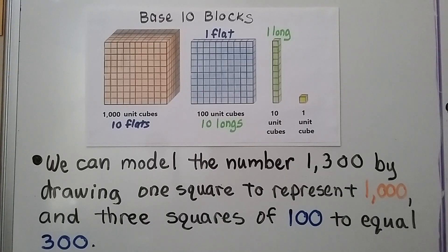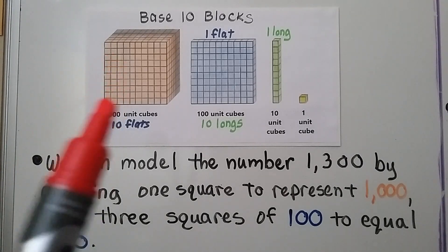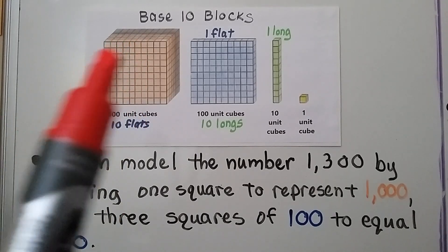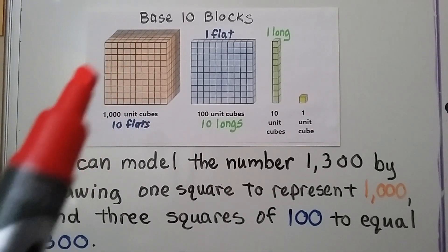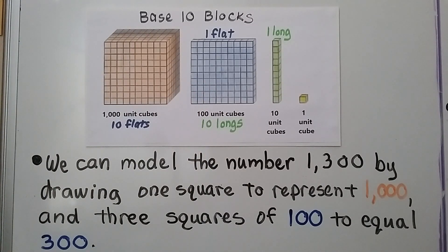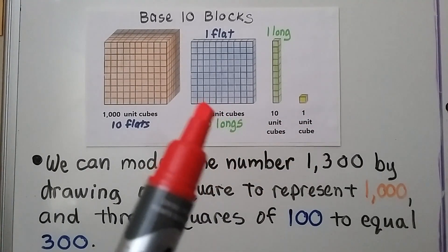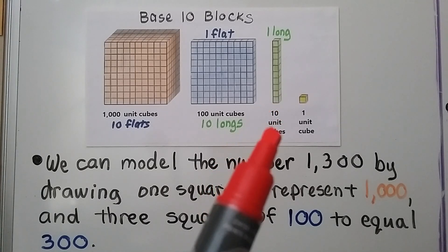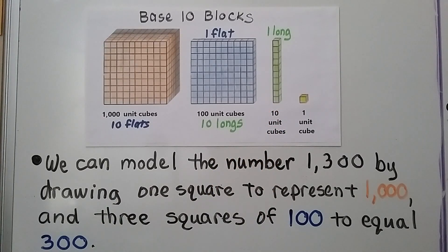These are the base 10 blocks. We've got 1,000 unit cubes — that's 1,000. This big orange cube is equal to 10 of these blue flats, and each of these blue flats is 100 unit cubes. Each blue flat is also equal to 10 of these longs, which are 10 unit cubes. We can model the number 1,300 by drawing 1 square to represent 1,000 and 3 squares of 100 to equal 300.